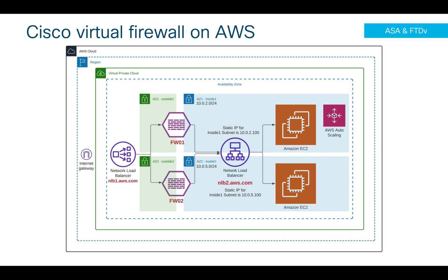If you look at this architecture on the right-hand side, we have nlb2.aws — that is a network load balancer that faces towards my application servers. These application servers can be in autoscale or they can be static servers deployed in multiple availability zones.